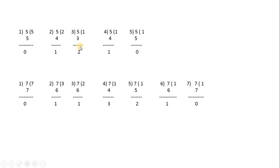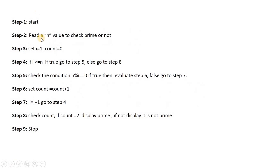Now we will develop an algorithm based on this logic. This is the algorithm for prime number. Step 1: Start. Step 2: Read n. Step 3: Set i = 1 and count = 0. Step 4: If i is less than or equal to n and it is true, go to step 5; else go to step 8.